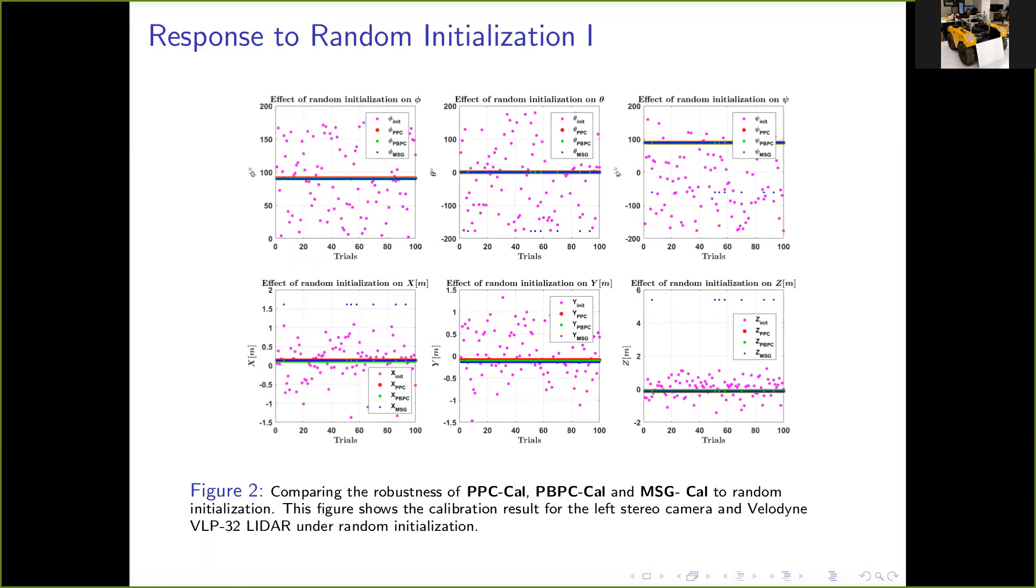Figure 2 shows the response of PPC-Cal, PBPC-Cal and MSG-Cal to random initialization in red, green, and blue respectively. As shown in the figure, PPC-Cal and PBPC-Cal are robust to random initialization, while MSG-Cal exhibits divergence in a few cases. All the methods converge to nearly the same rotational values but show variation in translational values. This is because the point-to-plane constraint used in all the methods is better at constraining rotation than at constraining translation. PBPC-Cal uses an additional point-to-back-projected plane constraint which helps improve translation estimation accuracy.